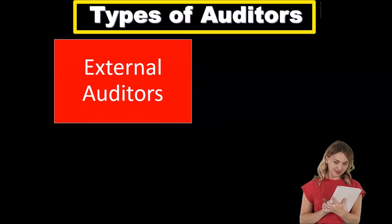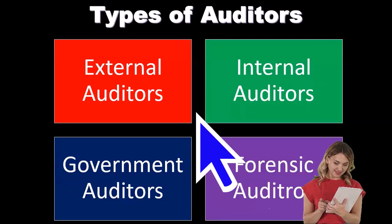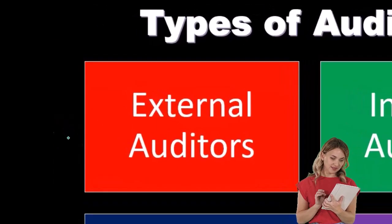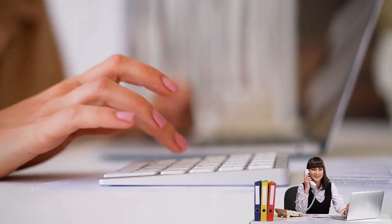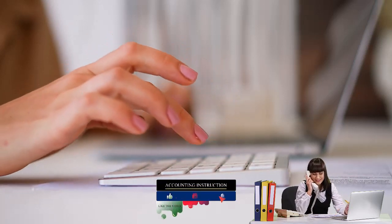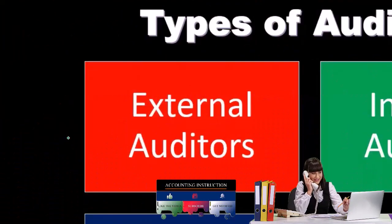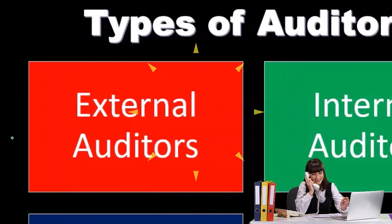Types of auditors include the external auditors, internal auditors, government auditors, and forensic auditors. We here will usually be considering the external auditors. When we're thinking about a CPA firm or public accounting, we're typically thinking of the external auditors — something that's not related to the company. That's part of the benefit of who they are: they can give their opinion because they're not related to the company. An external auditor comes in, they're paid, but they're not in any other significant way related to the company. They have independence in that format.